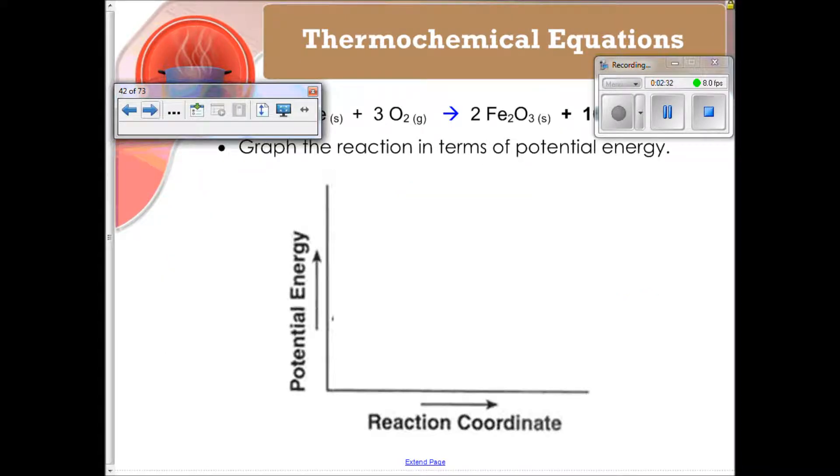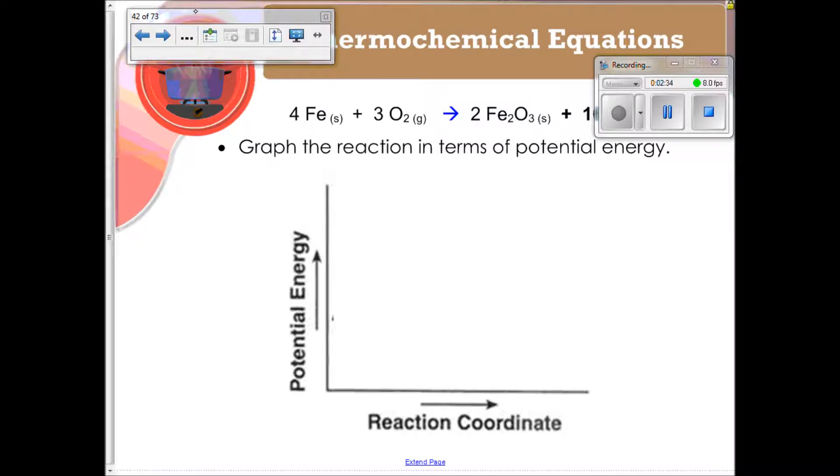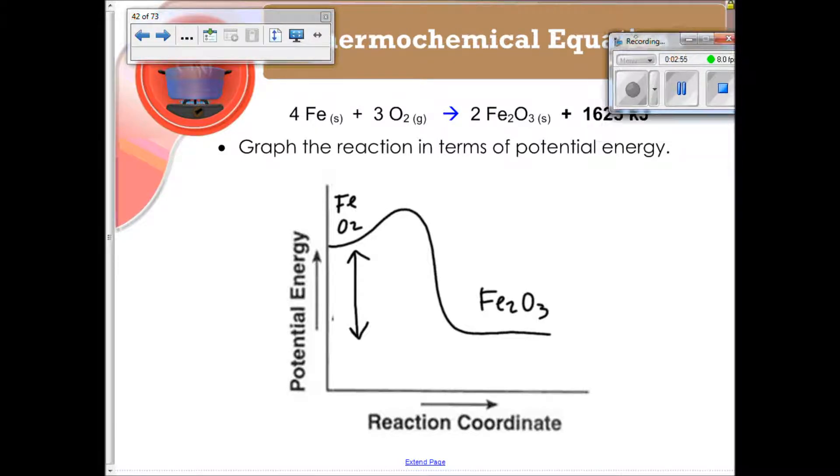We were going to graph that reaction that we just dealt with in terms of potential energy. Remember, we talked about energy in video 1. This is an exothermic reaction, so I'm going to draw it like this. This is what we start with. We've got our iron and we've got our oxygen. And this is what we're ending with. We've got our iron 3 oxide over here.